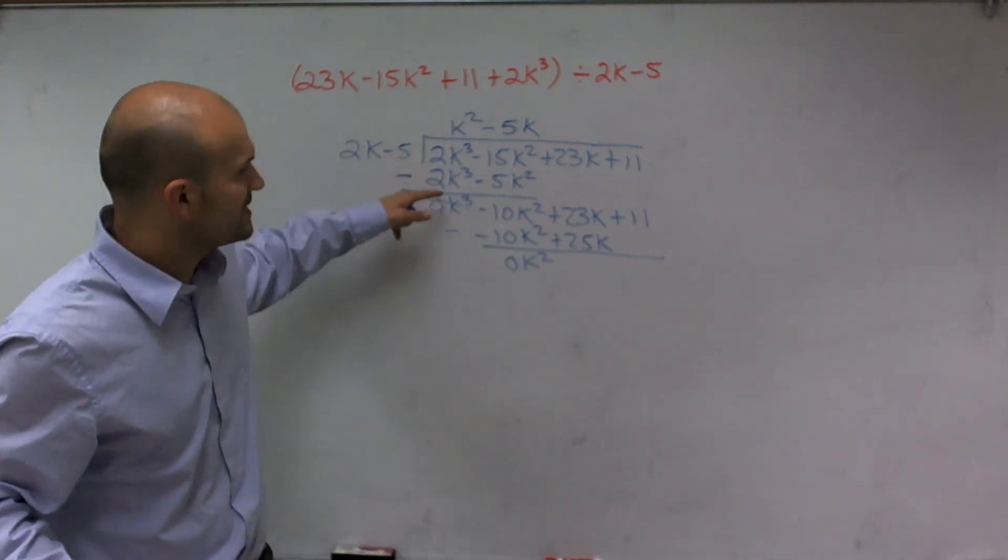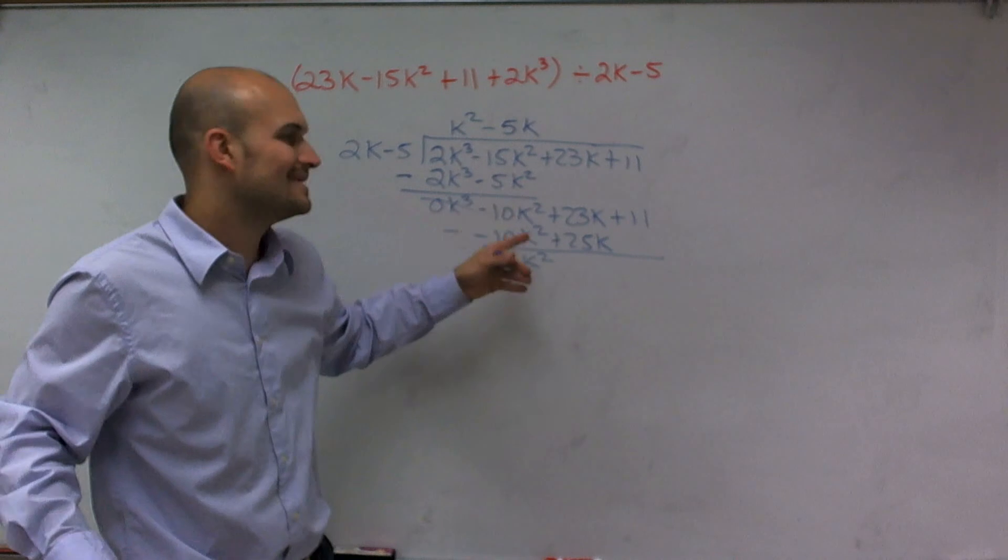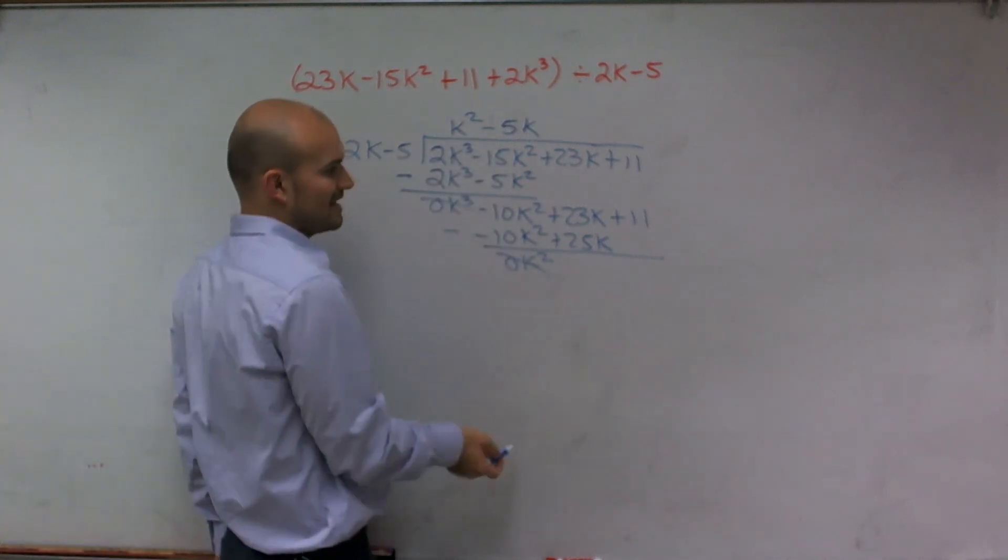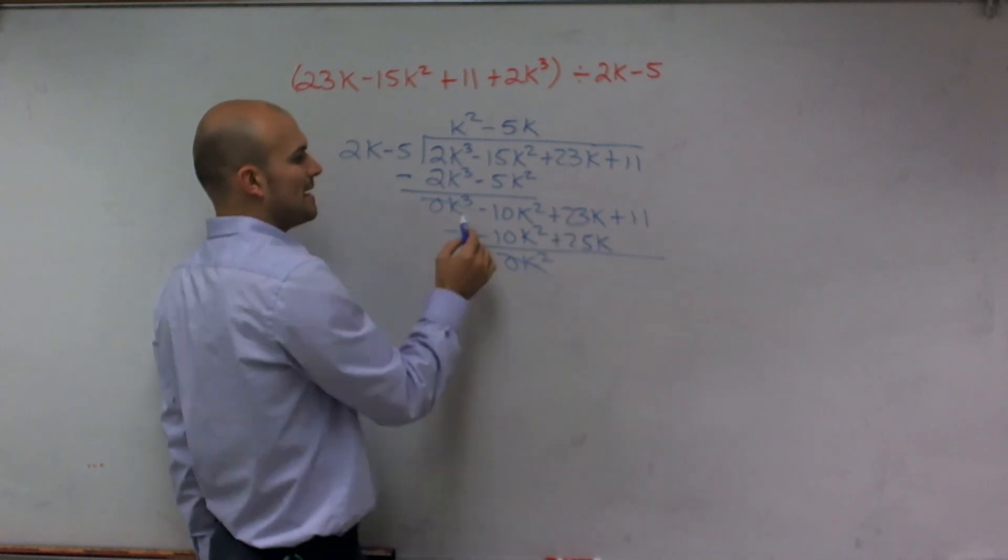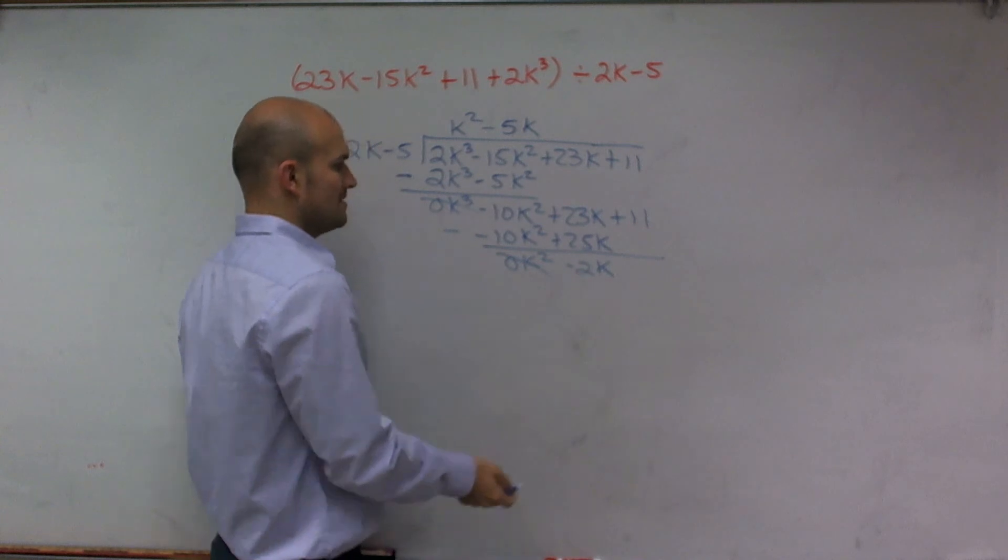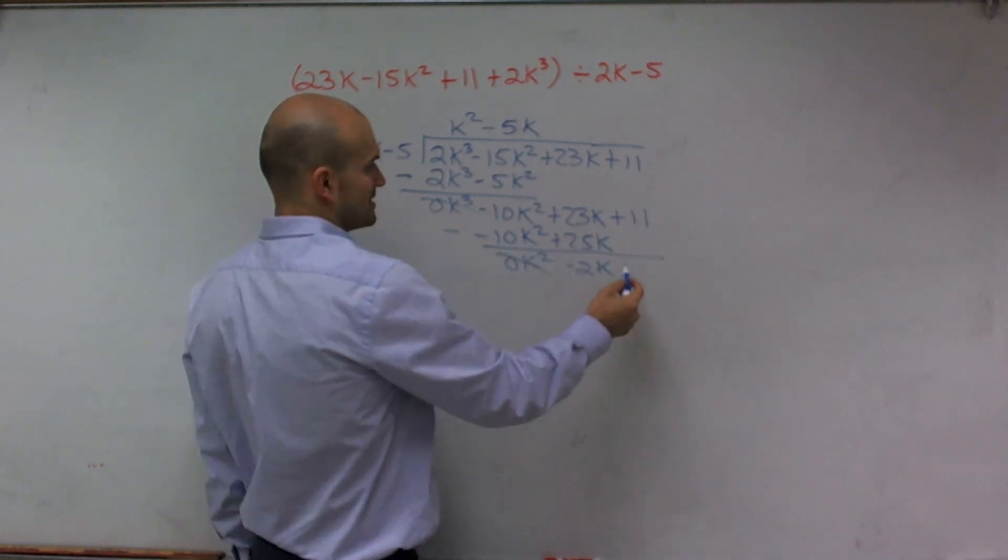And if you haven't noticed, we always want to divide that in so we get that to cancel out. So your work should always make sense with that. So that's going to cancel out. 23k minus 25k is a negative 2k. And then, there's nothing I could subtract 11 from, so I'll just bring that down.